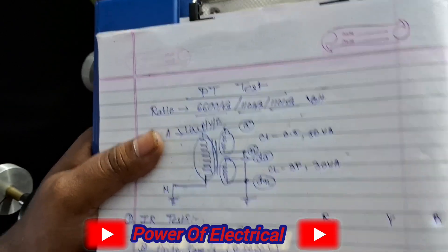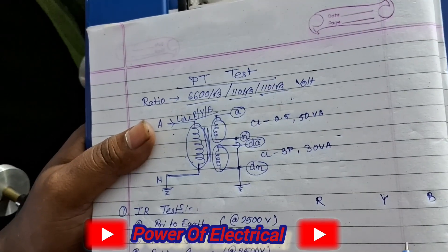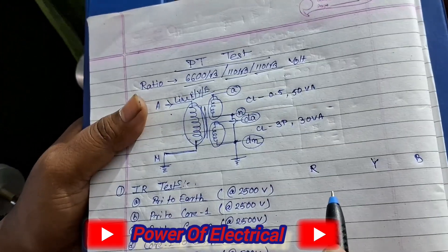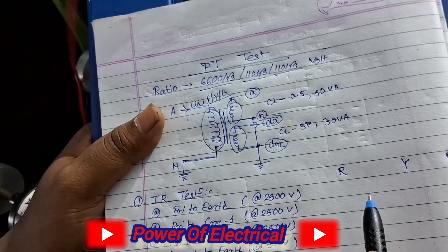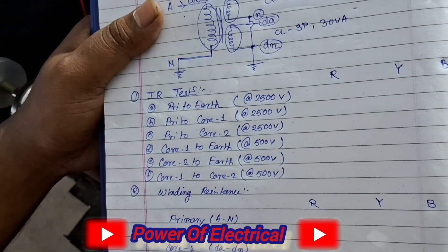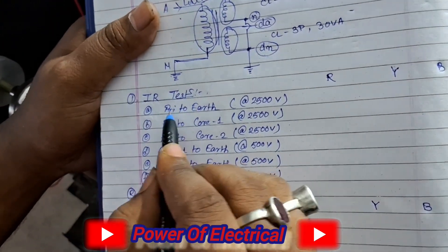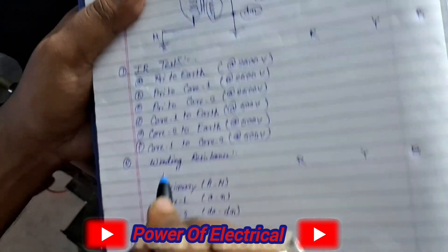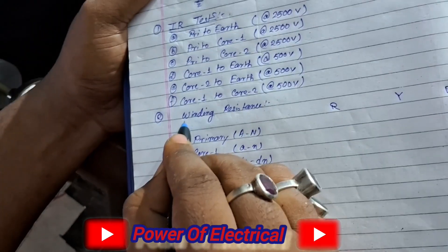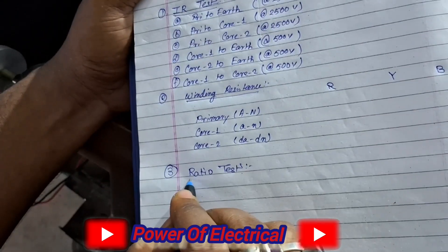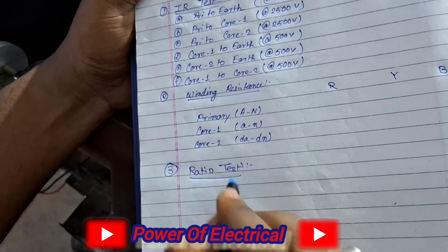In the substation or power plant, we have some pre-commissioning tests for the PT. We have three pre-commissioning tests: first is the IR test, second is the winding resistance test, and third is the ratio test.